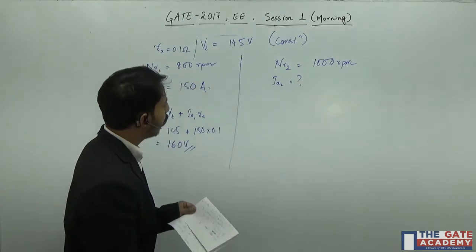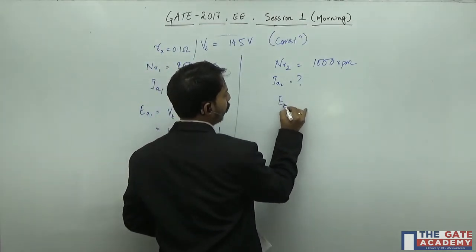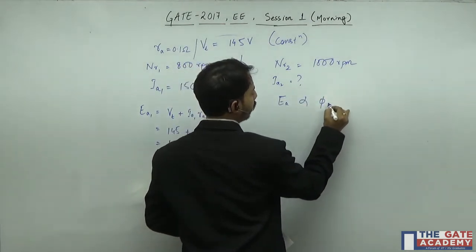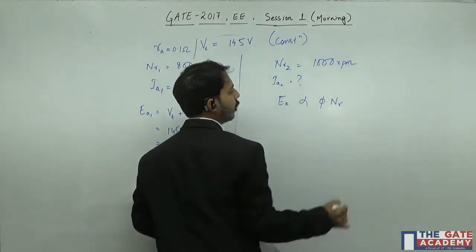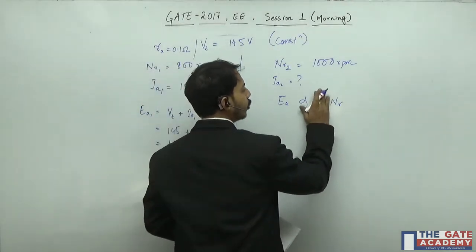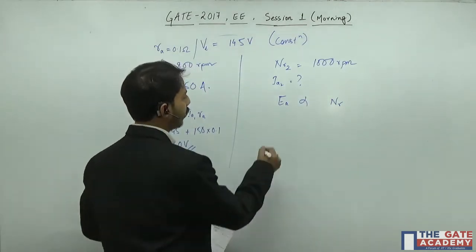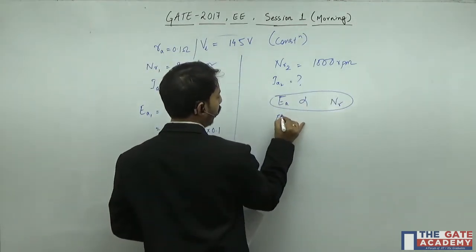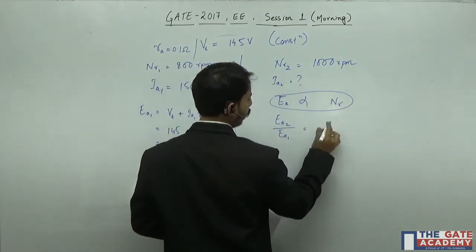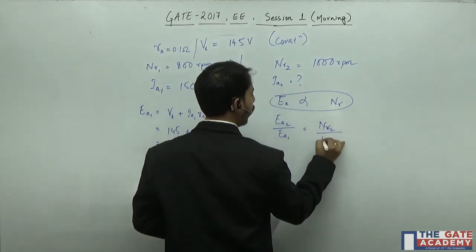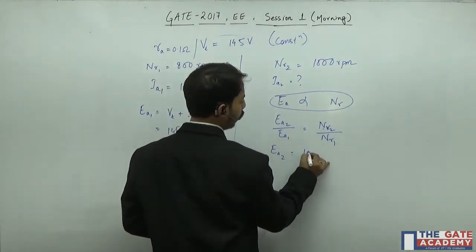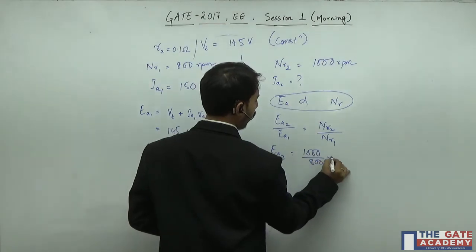We know EMF is proportional to flux into rotor speed. Here it's a separately excited machine, so flux we can say is constant. So EA is directly proportional to the speed. We can write EA2 by EA1 equals N2 by N1. From here we can find EA2 equals 1000 by 800 into 160, which comes out to be 200.